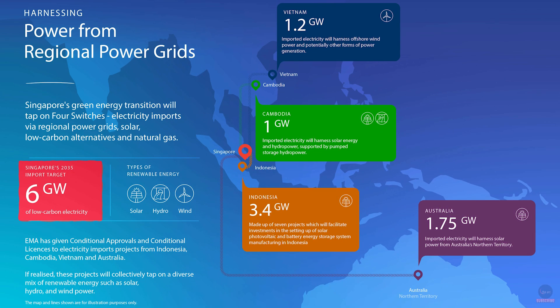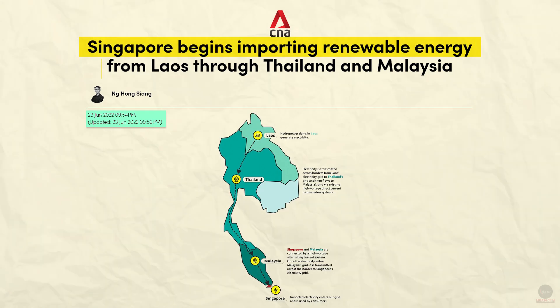Singapore is looking to import about 6 GW of low-carbon electricity by 2035. It has granted conditional licenses for 2 GW of electricity imports from Indonesia, as well as conditional approvals for 1.4 GW from Indonesia, 1 GW from Cambodia and 1.2 GW from Vietnam. Singapore will also import up to 200 MW of renewable hydropower through a cross-border initiative called the Lao PDR-Thailand-Malaysia-Singapore Power Integration Project.